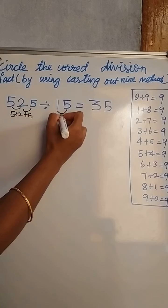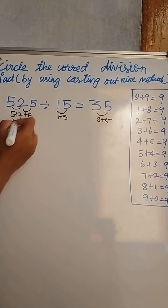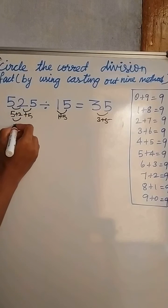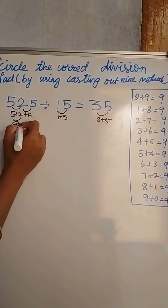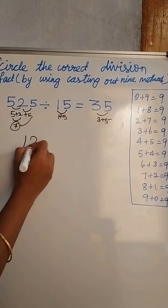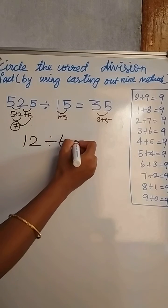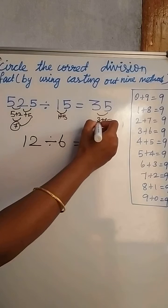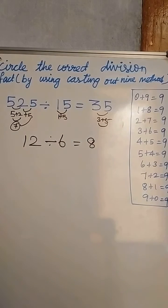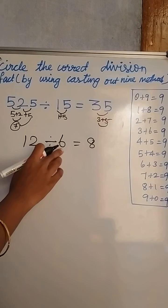The next step is to write the digit sums: five plus two equals seven for 525, one plus five equals six for 15, and three plus five equals eight for 35. So we get 12 divided by six equals eight.